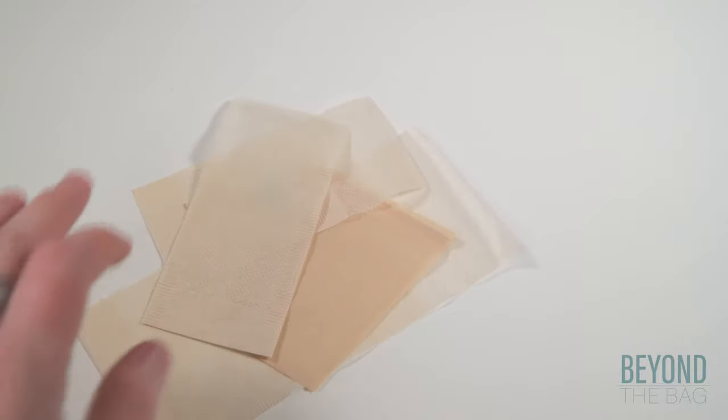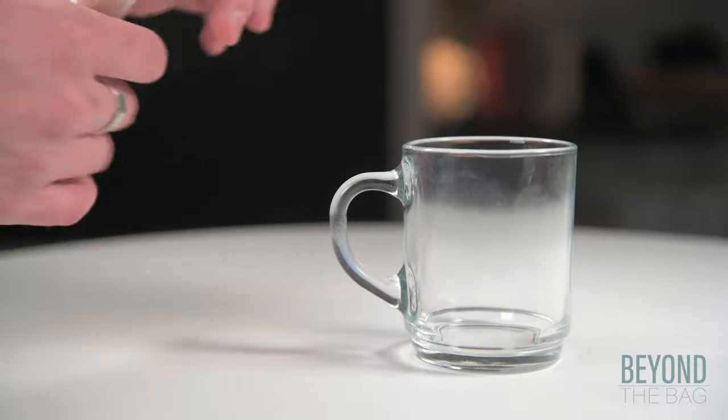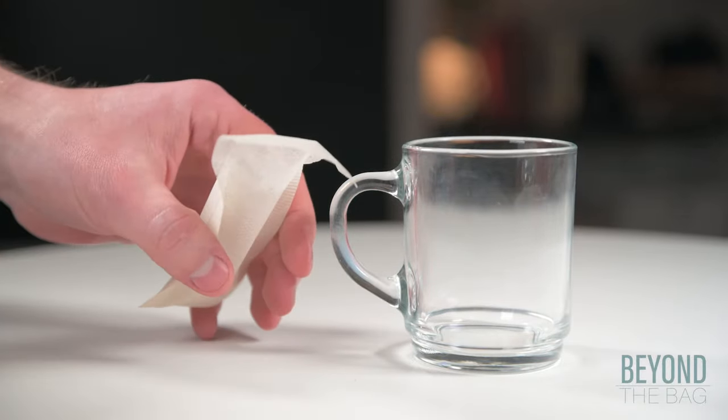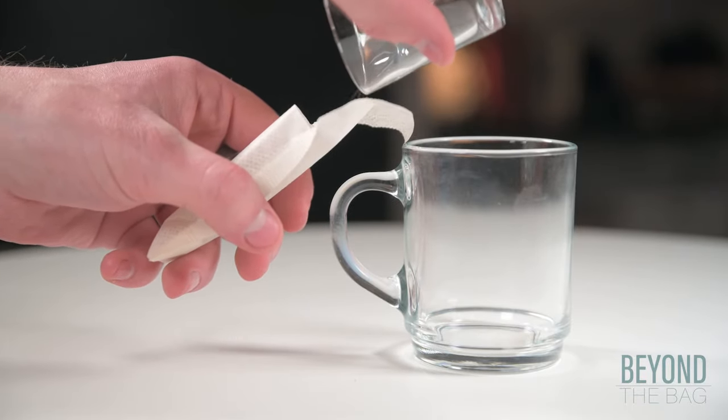Lastly, we have tea filters. These are paper bags that can be filled with loose tea for steeping. There are a few different designs. To use one with an open pocket, fill it with tea and then place it in a cup or mug.